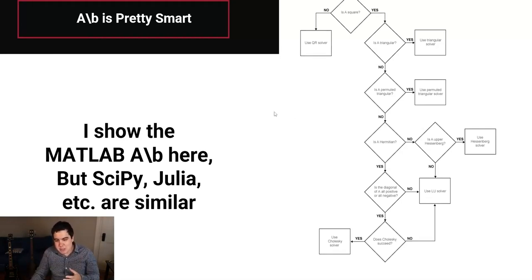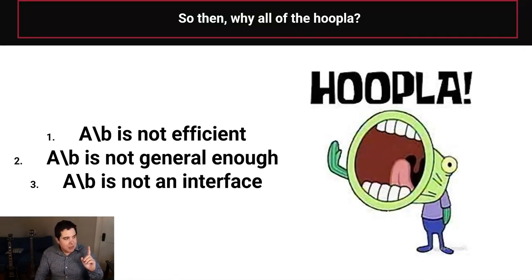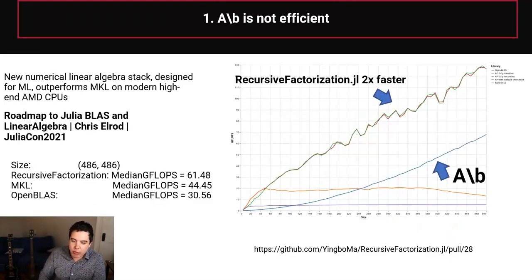But that said, it will specialize in some cases. So it has a different poly-algorithm for when you have a sparse matrix. But there is a lot of issues with it. So why all the hoopla about A backslash B? Well, three things. One, it's not efficient. Two, it's not general enough. And three, it's not an interface. So let me go into these three points.